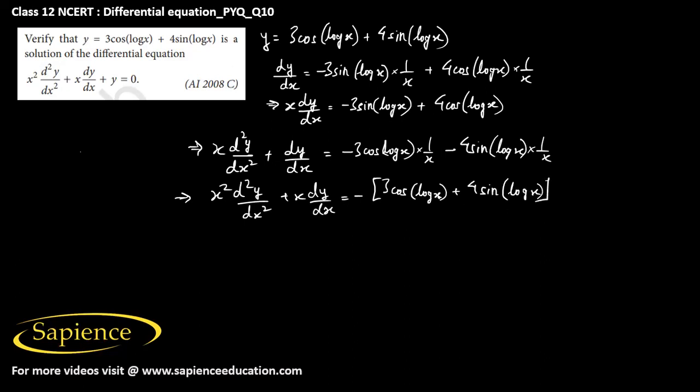This is nothing but y only. Therefore, we can say that x square d square y by dx square plus x dy by dx plus y equals 0. Hence verified.